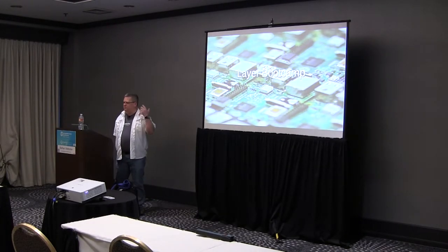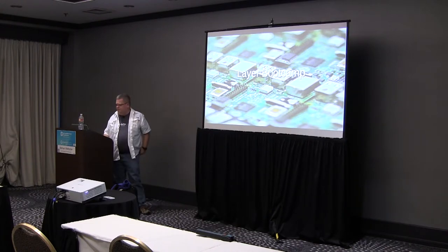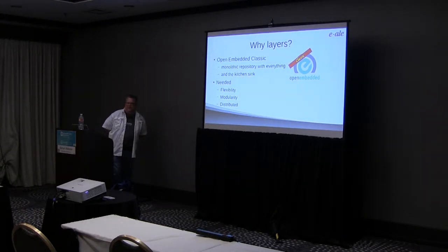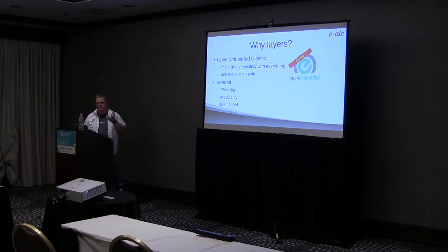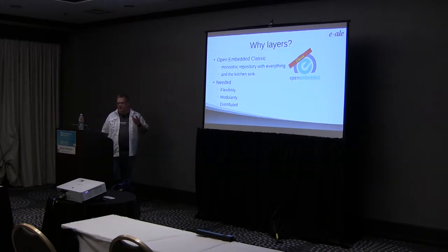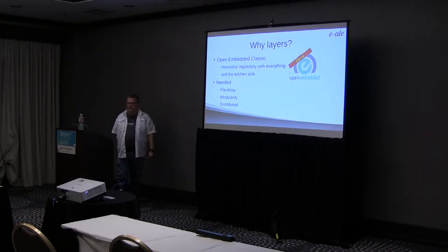I talked a bit about layers already, so let me give you an idea of why we have layers. Going back to OpenEmbedded Classic: nothing against Buildroot, but in Buildroot everything you need is all right there and you just use menuconfig to change everything — it's all monolithic. That makes it difficult to upgrade or for other people to roll their own version. In the old OpenEmbedded Classic days, it was just one gigantic repository — everything that is now in meta-openembedded and all these other layers was all in one place, and it was a mess.